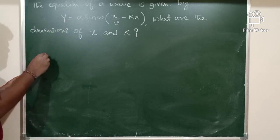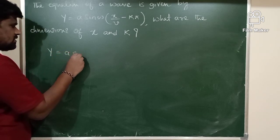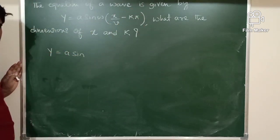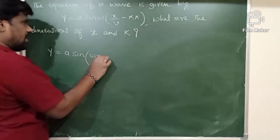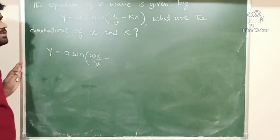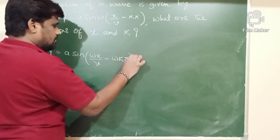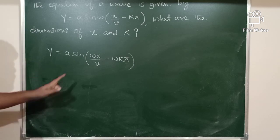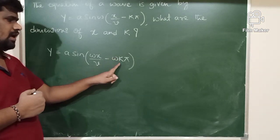Let me take the given equation: Y equals A sin(ωX/V − K·π). I will take omega inside, so the equation becomes Y equals A sin(ωX/V − ωK·π).